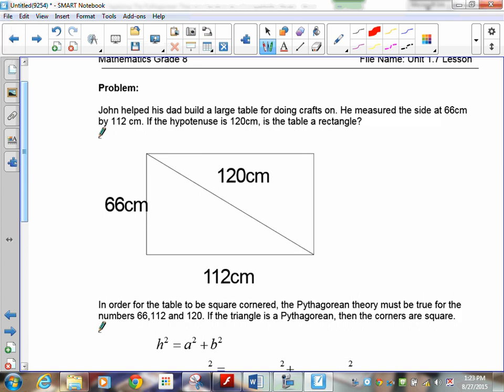This is one that you'll see on tests and quizzes quite frequently. John helped his dad build a large table for doing crafts on. He measured the size at 66 centimeters, and the length of 112. If he measures the hypotenuse at 120 centimeters, the question is, does he have a rectangular table? How are we going to check?